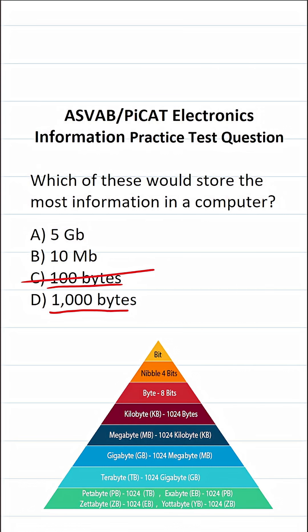Let's take a look at this conversion pyramid here. Since we're talking about bytes, megabytes, and gigabytes, we're only going to be looking at this part of it. The way this pyramid works is the further you go down, the bigger the unit. So in other words, a gigabyte is significantly bigger than a byte.